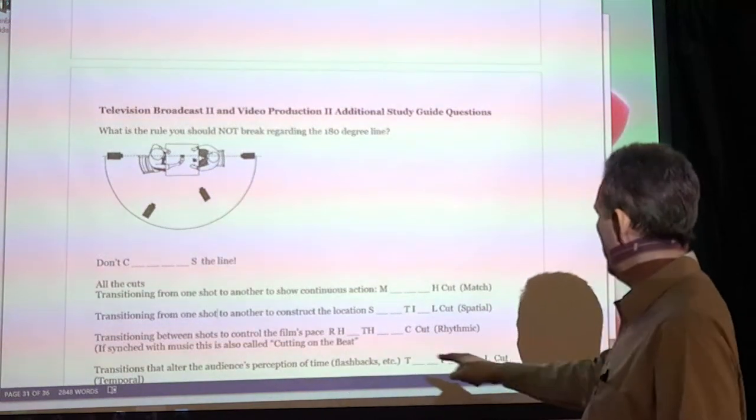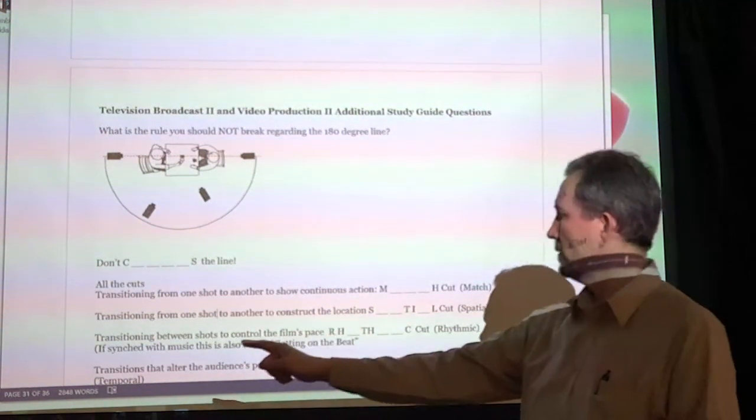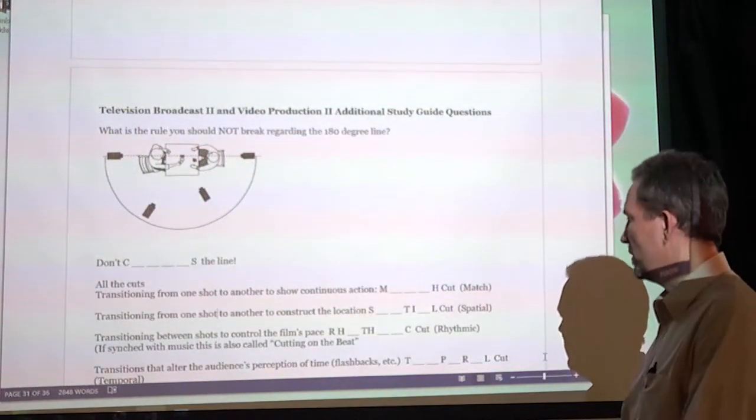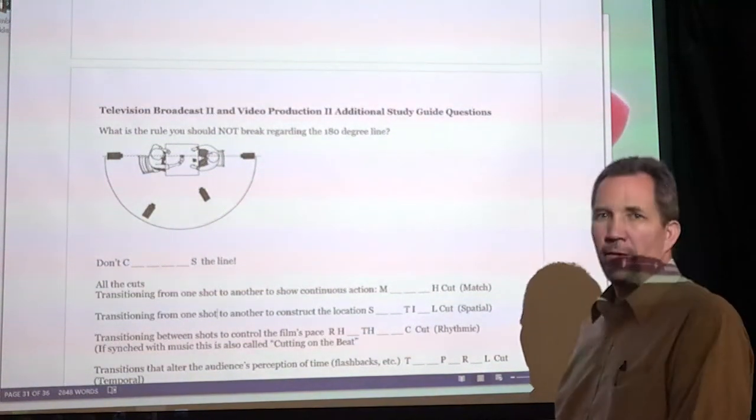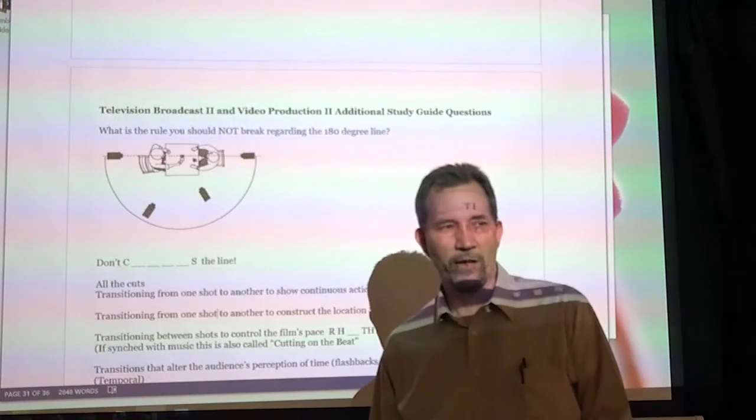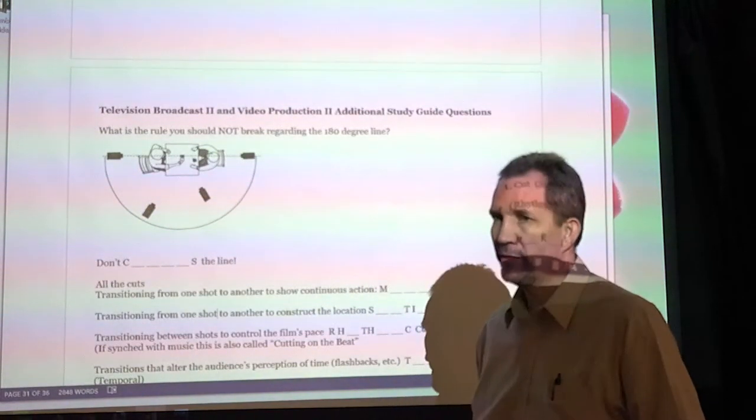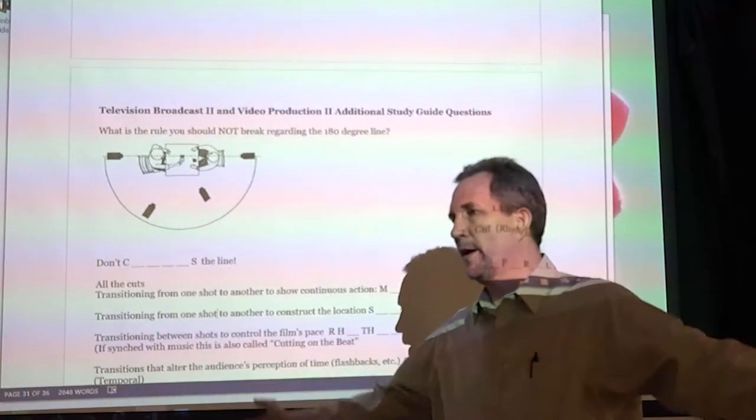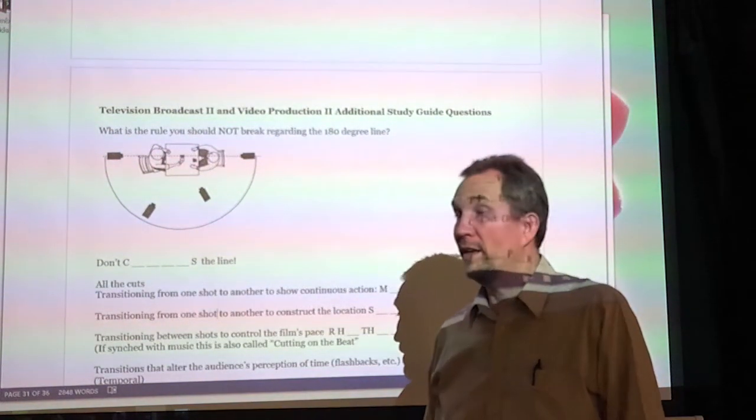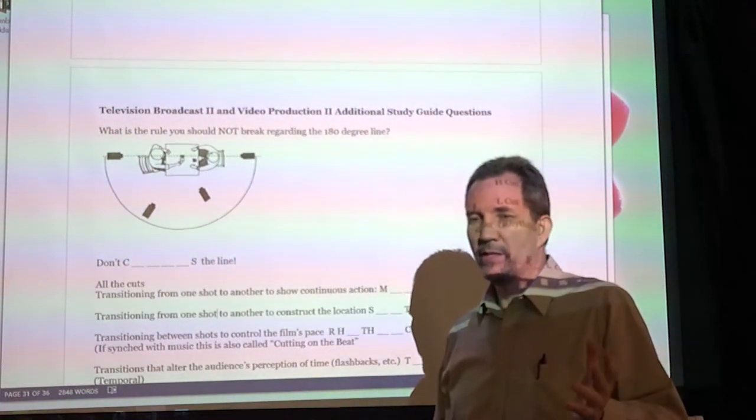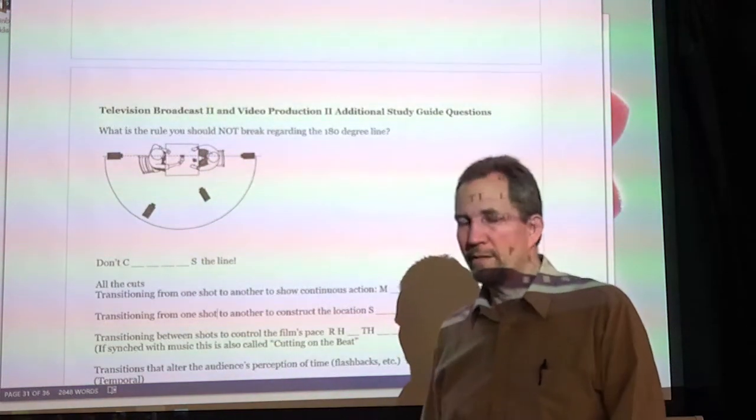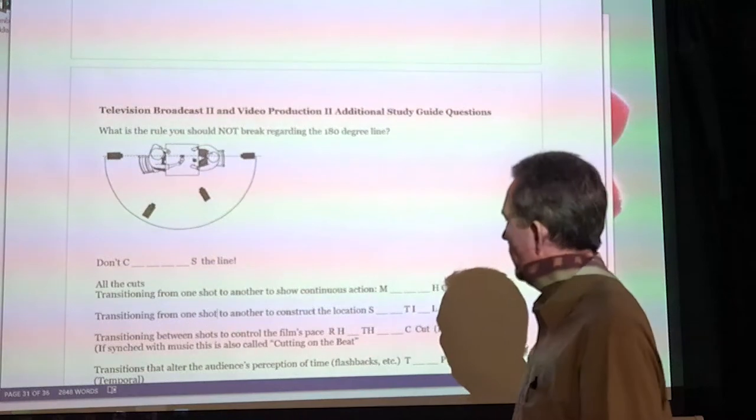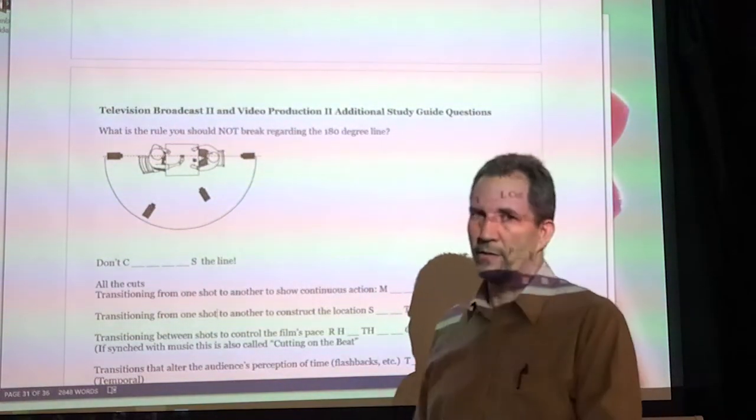You can barely see this one, but I'm not going to be scrolling it. So you just have to pay attention here. Transitions that alter the audience's perception of time. That's happening so much. Christopher Nolan loves to do it. Everyone does flashbacks. If you've seen Dunkirk, you were thrown for a loop for like the first 30 minutes of the film. What is going on? Because he just kept cutting around. But he is the master of temporal cuts. So this is what temporal cuts look like.